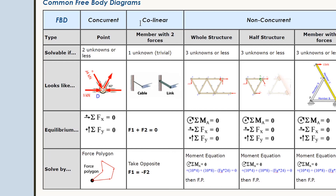Similar to concurrent is collinear, which is very simple. A classic example of collinear is a rope or link with two pin joints — in both cases the force must be in line with the member or through the two pin joints. There are only two forces, so in equilibrium they must be opposite. It's so trivial that we immediately say the force on one side must be opposite on the other — that's collinear. Then there's non-concurrent.